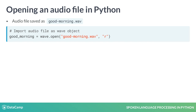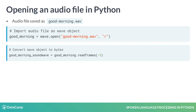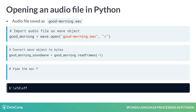However, in this state, it's not very useful to us. To manipulate it further, we'll use the readframes method to convert the WAV object to bytes. The negative 1 means we want to read in all of the pieces of information within the WAV object.